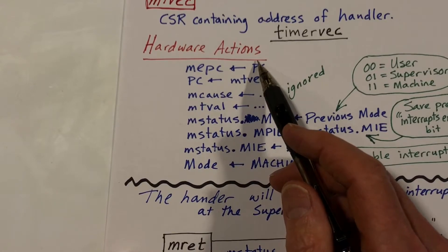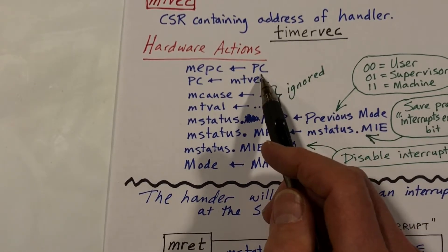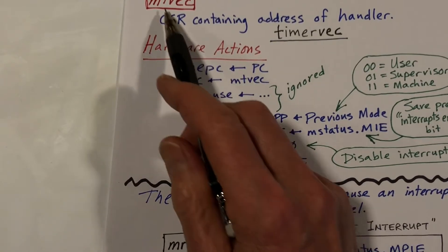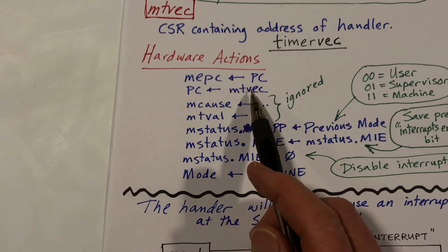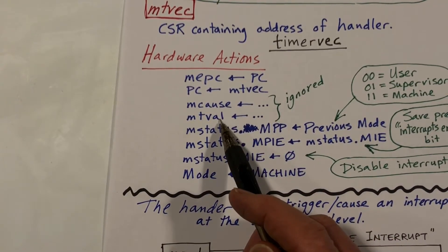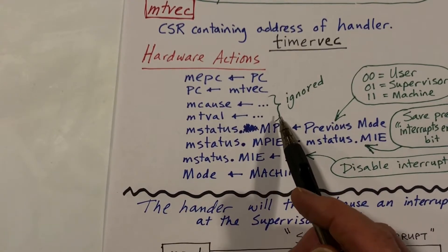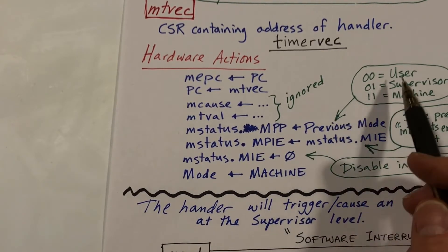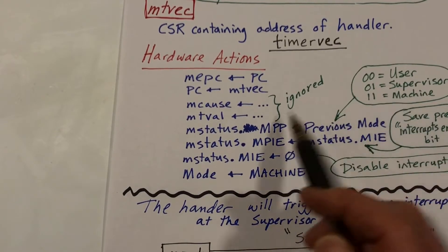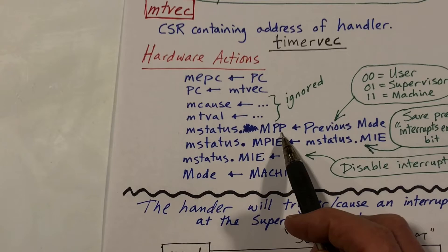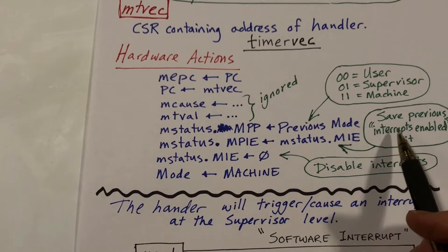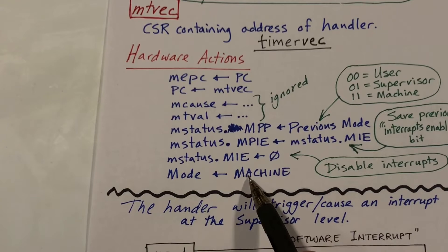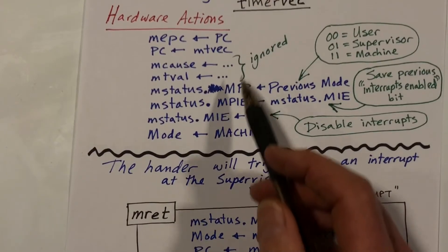The hardware, after completing the previous instruction, saves the program counter in a register called MEPC, loads the program counter with mtvec to force a jump to the handler. The mcause and mtval registers are ignored — it's a timer interrupt and there's no further information we're interested in. The hardware saves the previous mode (user, supervisor, or machine mode) in two bits, saves the previous value of interrupts enabled, then disables interrupts and switches to machine mode. We then execute the timervec code.